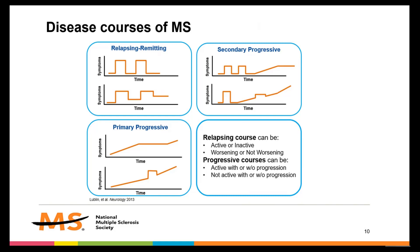Relapsing remitting MS typically worsens over time and can transition to secondary progressive MS, or SPMS. In secondary progressive MS, symptoms worsen more steadily over time with or without the occurrence of relapses and remissions. The final type of MS is primary progressive MS, or PPMS. This is not very common, with an initial diagnosis being about 10% of people with MS. PPMS is characterized by slowly worsening symptoms and disability progression from the beginning, with few or no relapses or remissions.